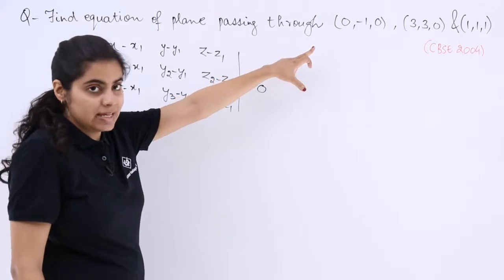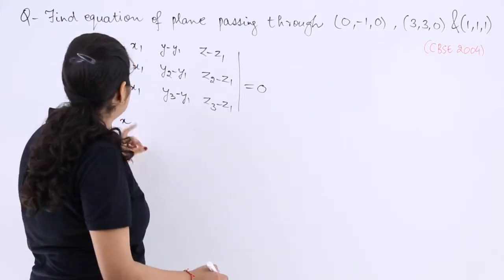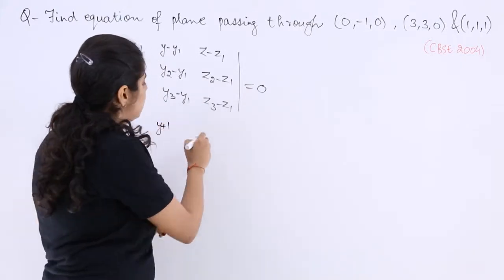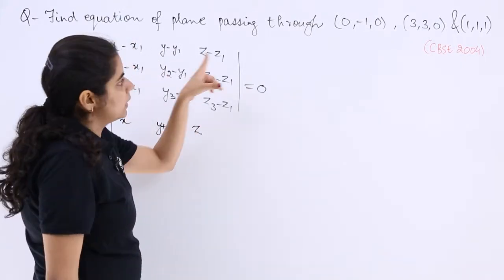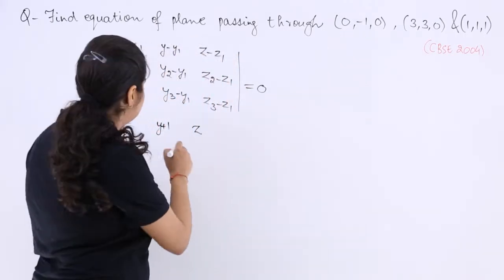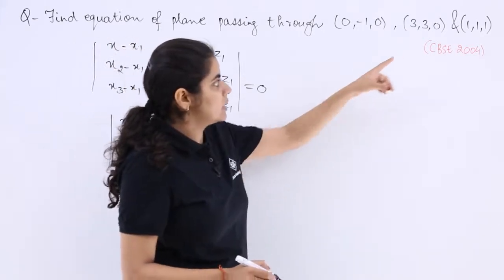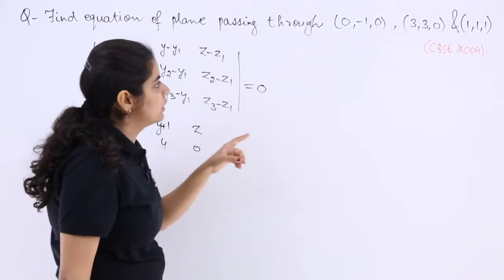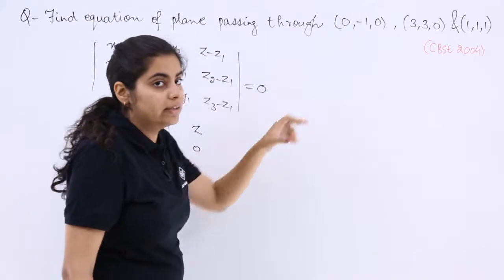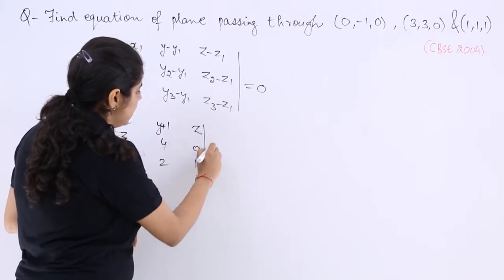x minus 0 is x. Then x2 minus x1 is 3 minus 0. Again x minus x1, y minus y1, so y minus y1 means y plus 1, z minus z1, then x2 minus x1 means 3, y2 minus y1 is 4, z2 minus z1 is 0, similarly x3 minus x1 is 1, y3 minus y1 is again y3 minus y1, 1 and 1 here make it 2 and last is z3 minus z1 which is 1 minus 0 which is 1 equal to 0.